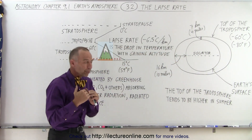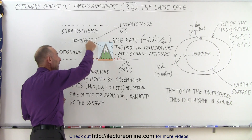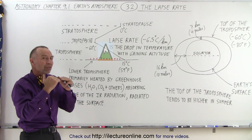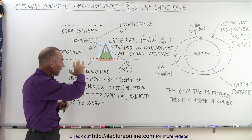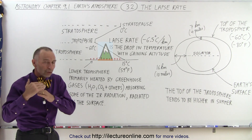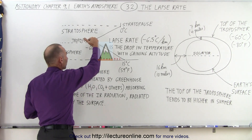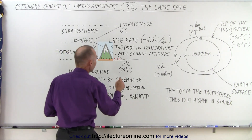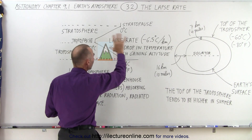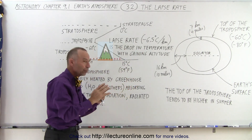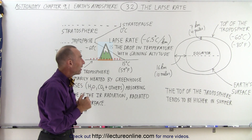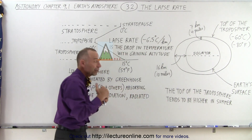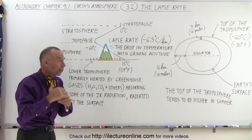The temperature at the top of the troposphere tends to be pretty close to minus 60 degrees Celsius most of the time — sometimes a little warmer or colder, but fairly steady. If we assume the distance to the top of the troposphere is about 10 kilometers, then taking the difference between the surface temperature and the temperature there, we realize that the lapse rate — the change in temperature with gaining elevation — is about negative 6.5 degrees Celsius for every kilometer of height gained, for every 1,000 meters gained.